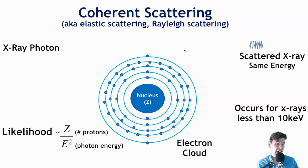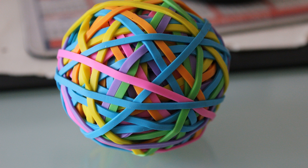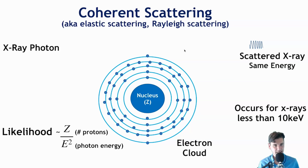The analogy: think of a rubber band ball thrown against a wall — it comes off with approximately the same energy it had going in. That's what we call elastic scattering, which is why this interaction is called elastic scattering.